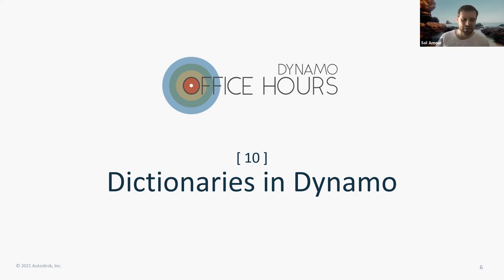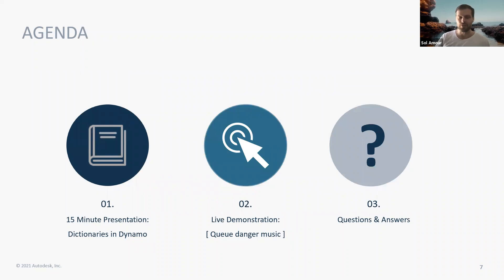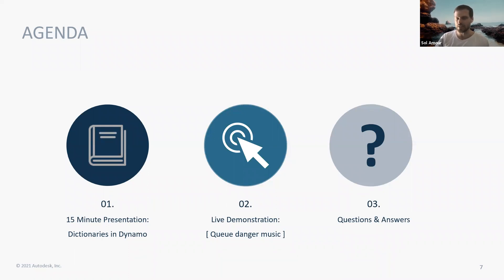We're going to take this one by the seat of our pants today. Welcome to Dictionaries in Dynamo. We're going to talk about a pretty cool feature inside Dynamo called Dictionaries — not to be confused with standard dictionaries where you look up words, albeit a little bit similar. We'll cover how that works in around a 15-minute presentation, do a live demonstration at the tail end which Jacob will take the reins on, and then there's a Q&A section. Please feel free to raise your hand or speak out — we're more than happy to have this as a conversation together.